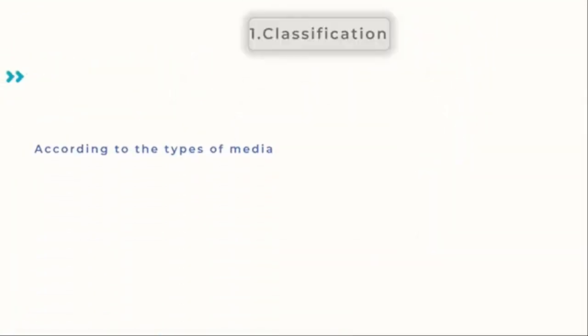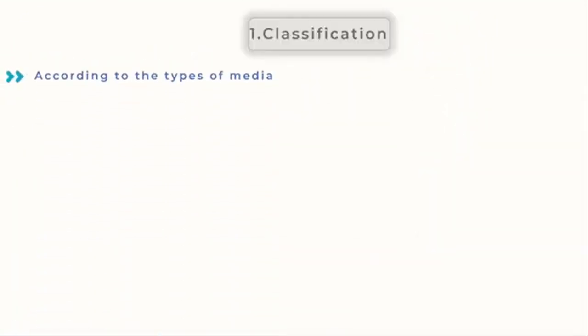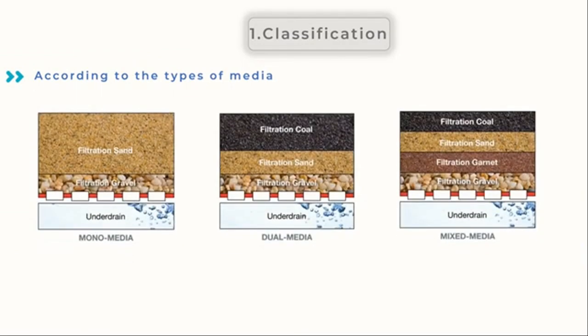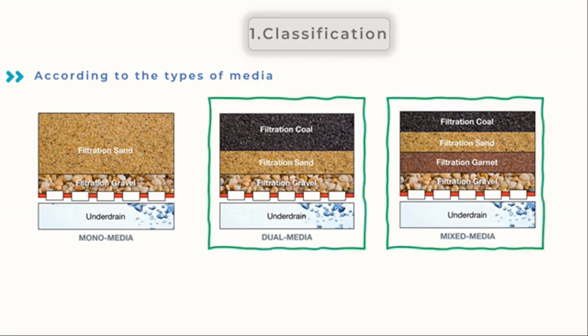The following categories of filters can be made based on the media types employed. There are three types of media filters: mono, dual, and mixed. The configuration and media used can help determine the optimal application for each filter profile, which offers a variety of advantages. All three types are utilized in water treatment, where dual and multimedia filters are gaining popularity. Longer operating times are guaranteed, thanks to the entire bed being employed for screening out pollutants.